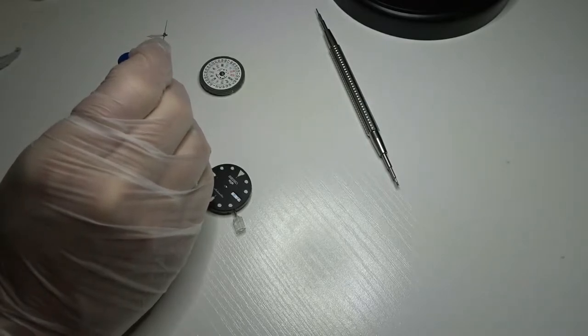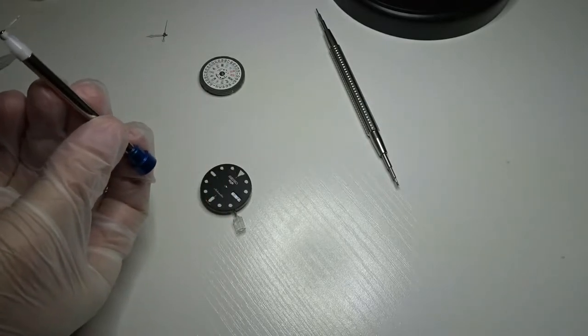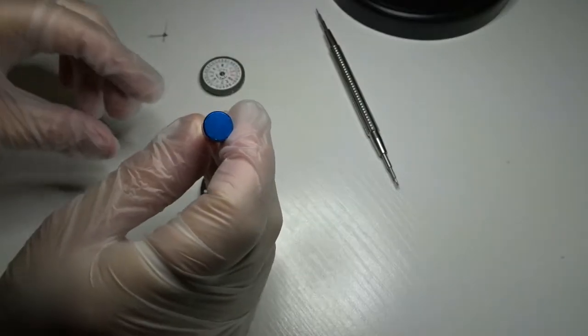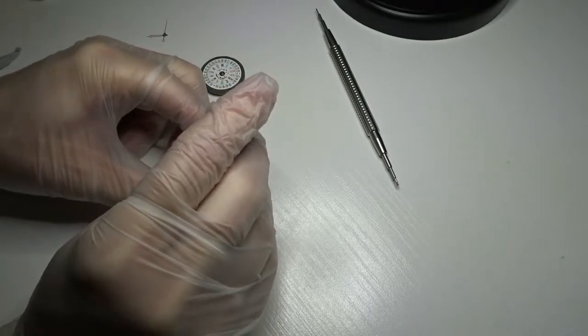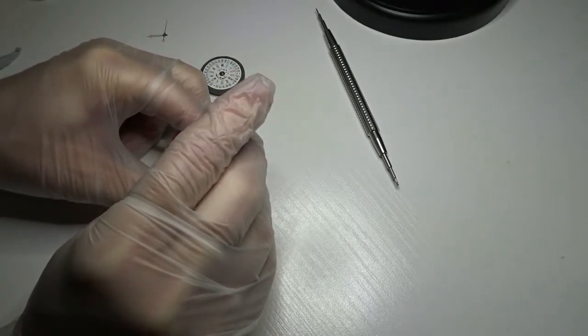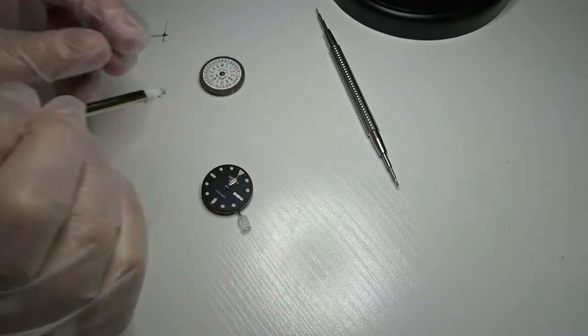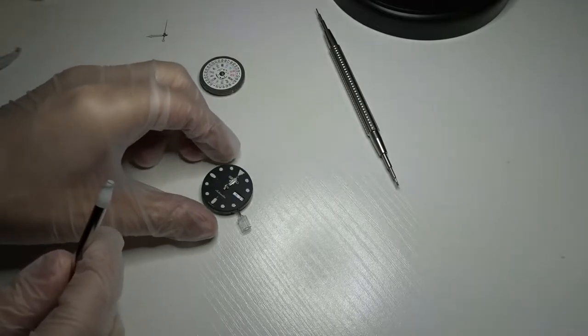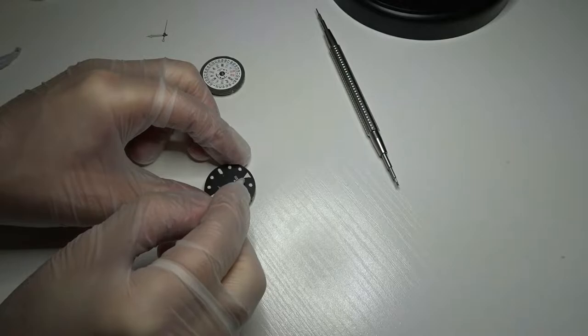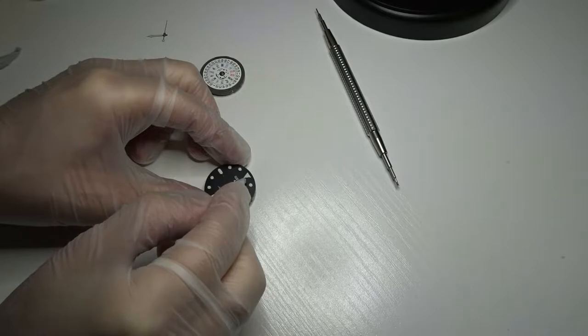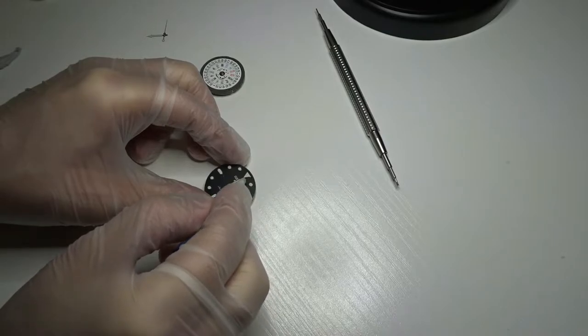So the tool I'm using here, again I got it a while back from Amazon, it's just a hands tool to apply hands. And you just got to get it onto the post. The hour hand is the easiest one because it's the biggest one. Get it on the post and then just nudge it a little bit to align it as good as you can with that 12 o'clock indice.